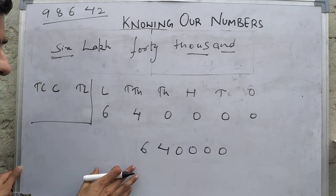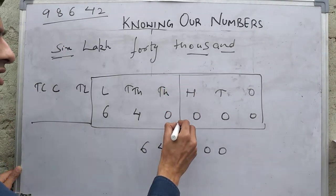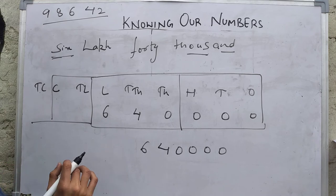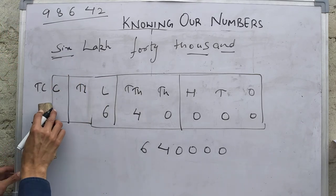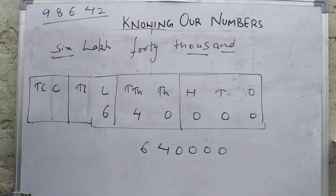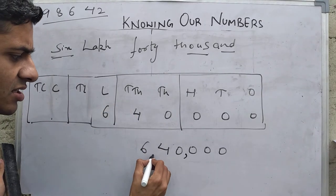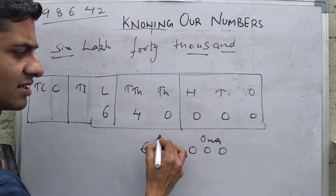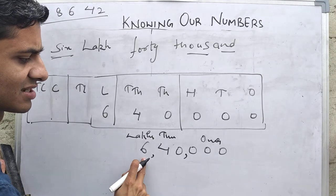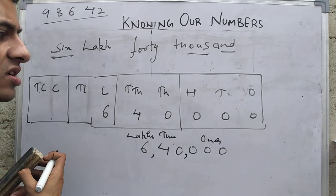When you read this number it is difficult, so to keep our work simplified, we read one period together and place a comma after every period. The ones period has three digits — place a comma here. The thousands period has two digits — place a comma here. Similarly, we can place commas further if the number requires it. Now you can clearly identify: this is the ones period, this is the thousands period, and this is the lakhs period — so the number is 6,40,000.